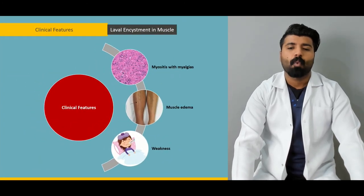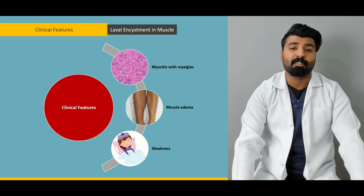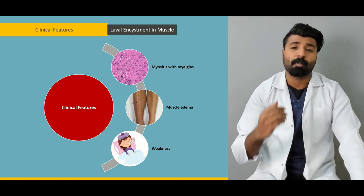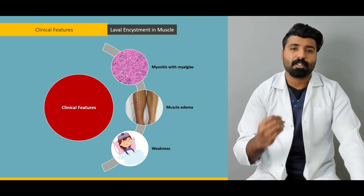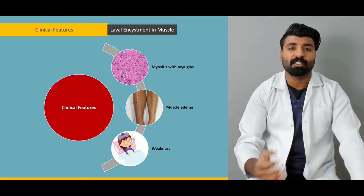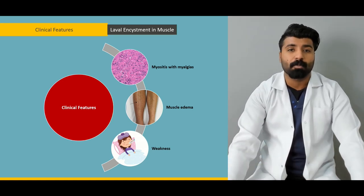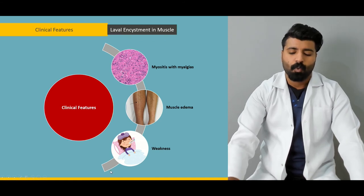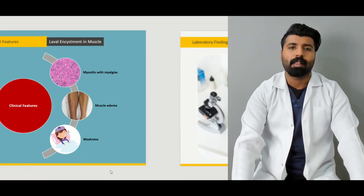Next, we have the clinical features in which larval encystment in the muscle will be seen. The first target organ for these larvae is going to be your muscles, and we're going to talk about what three critical features will come through your muscles.